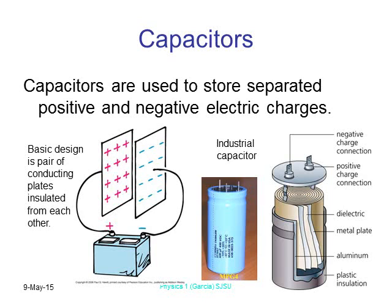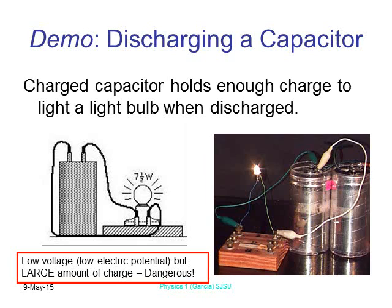A capacitor can be used to store separated positive and negative electrical charges. Take two plates insulated from each other so they're not touching — you have positives on one side, negatives on the other, and a battery to charge them. You can wrap those two plates with an insulator between them to make a capacitor. Capacitors were used in the first computers for binary code — the one-zero-one-zero — they were the first things ever used to do that.